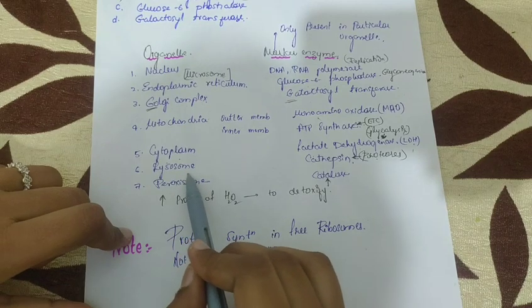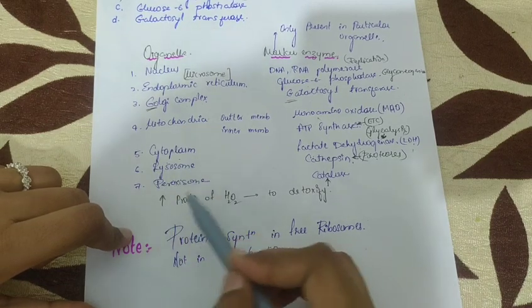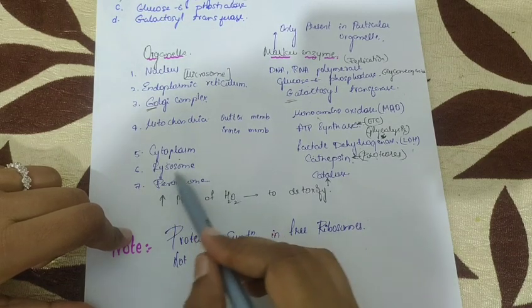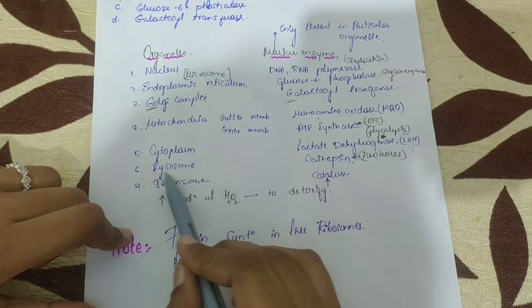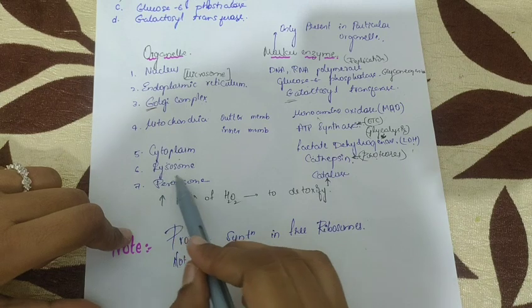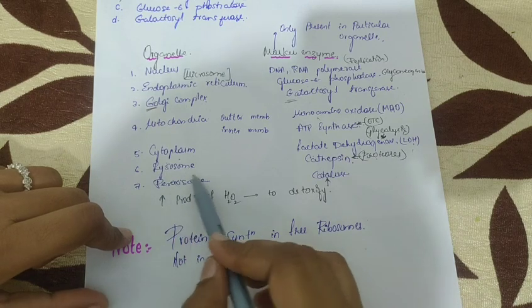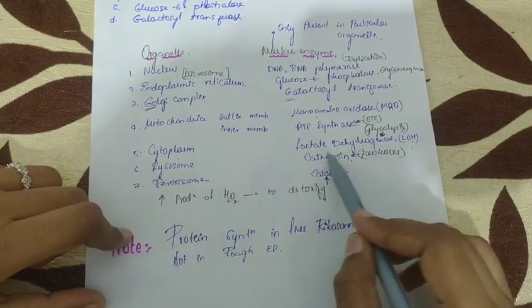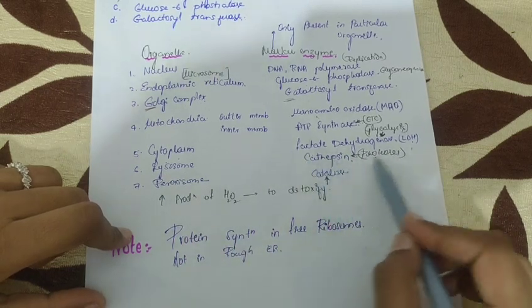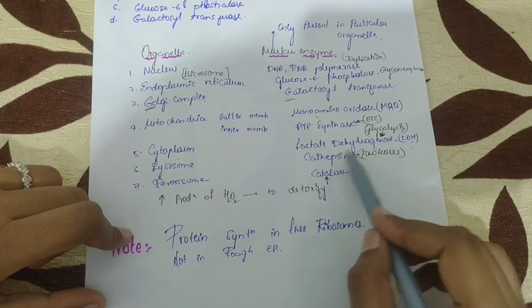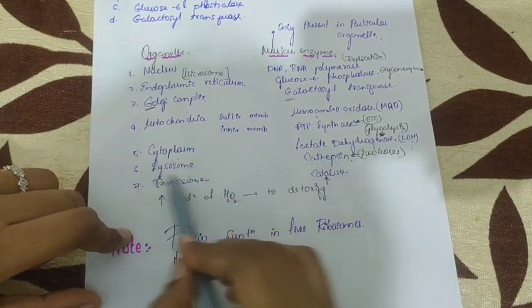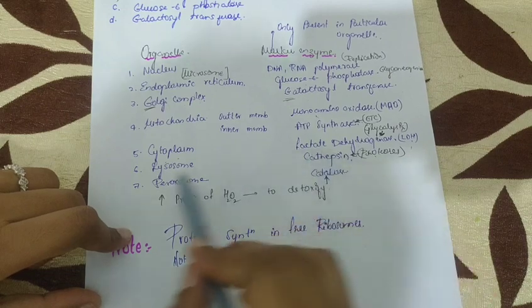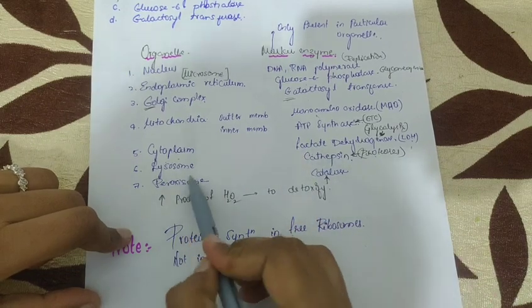Lysosomes are the suicide bags of the cell, containing all digestive enzymes — protein-digesting enzymes, carbohydrate-digesting enzymes, and lipid-digesting enzymes like lipase. Cathepsin is a protease present only in lysosomes that digests proteins. So cathepsin is the marker enzyme for lysosomes.